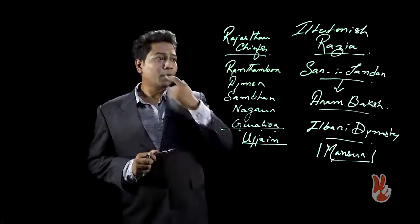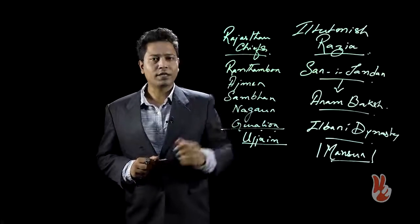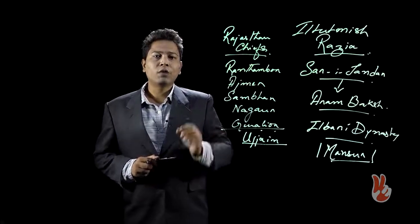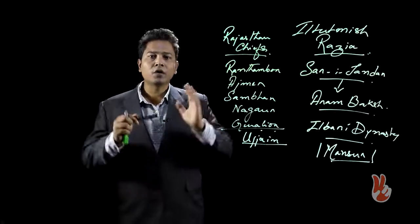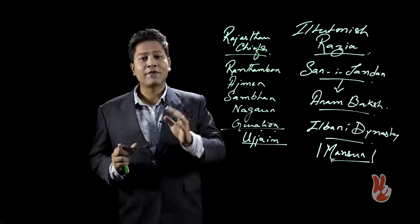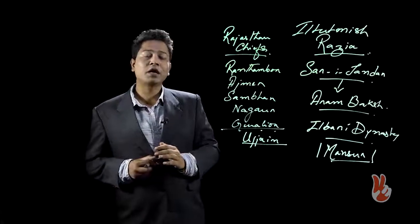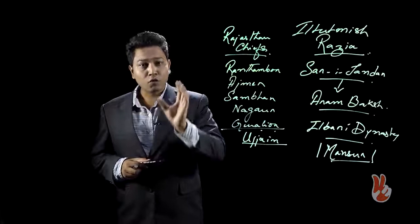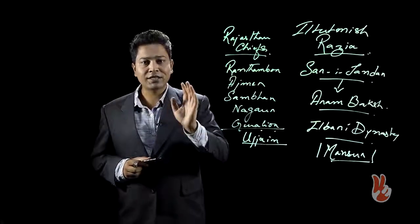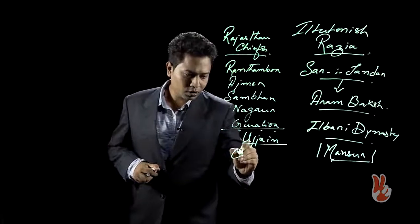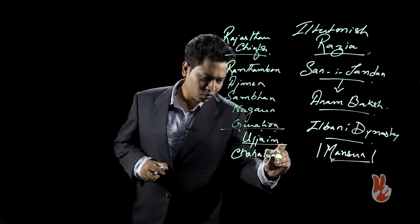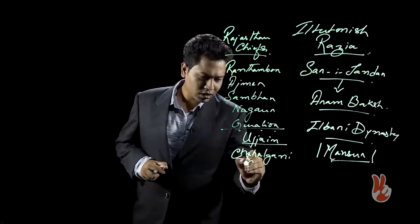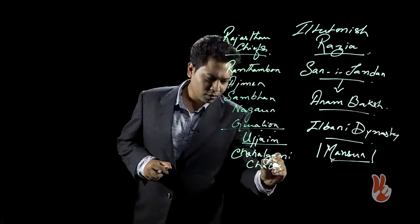Now remember, before we proceed into the reign of Razia, we should remember that one of the chief conflicts within the Delhi Sultanate is a conflict between the ruler and the nobility. This is evident during Iltutmish's time and this becomes self-evident during Razia. The Turkish nobility, which were collectively known as the Chehalgani or the Chalisa.